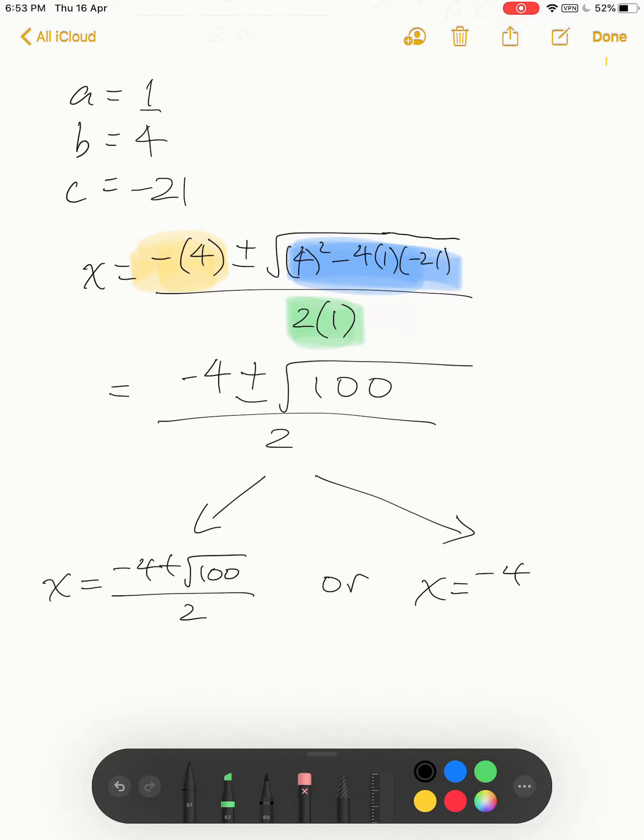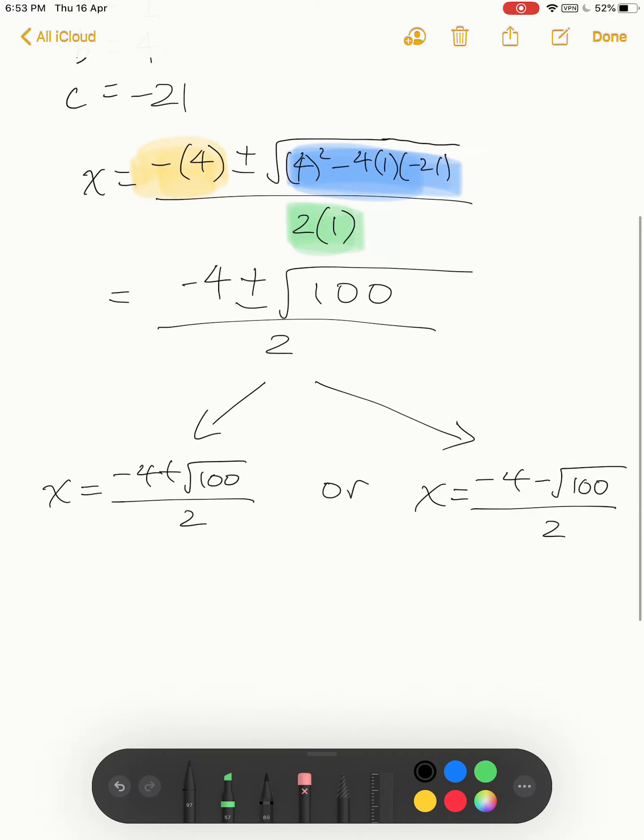This will yield 3, or x equals negative 7. We get the same answer because we are solving the same equation, just via different methods.